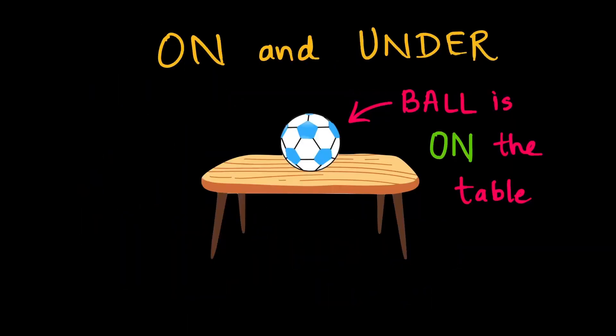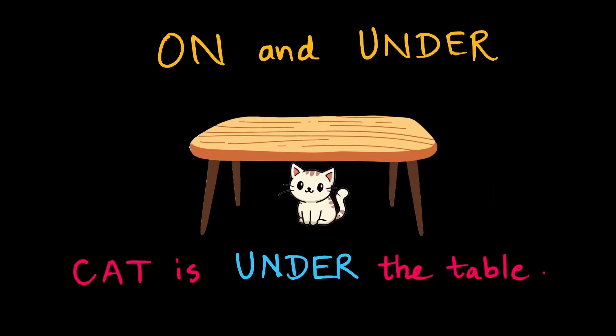Now let's talk about on and under. Look at this table and the football. We can see that the ball is on the table. And this cat is under the table. This is the basic concept of on and under.